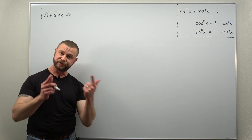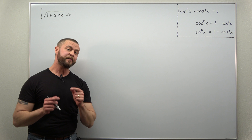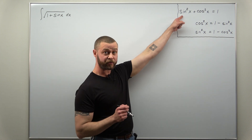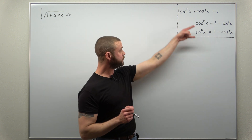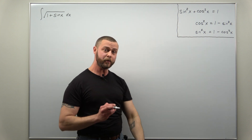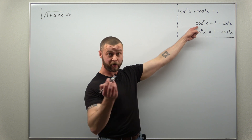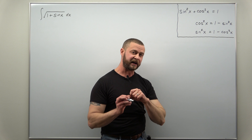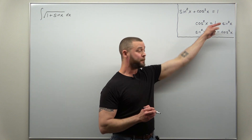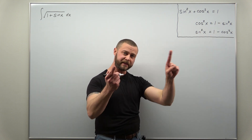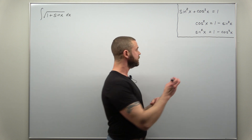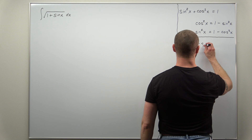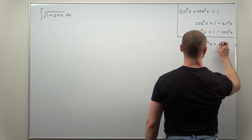This integral, like a lot of others, is tricky due to the square root, so we're going to think about how to eliminate the square root. We have the basic Pythagorean identity along with its two alternate versions. Notice we have a perfect square — cosine squared — and something that looks like one plus sine of x, except it's one minus sine squared. Let me go ahead and write that down: switching sides, one minus sine squared equals cosine squared of x.